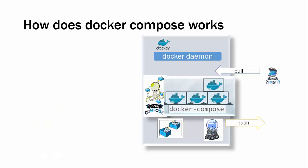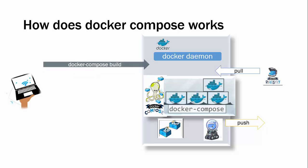You are going to have some registry — it is available readily from hub.docker.com or you can have your own local registry. From there you are going to pull the images and you can create a number of containers. You can also build using Docker Compose build.